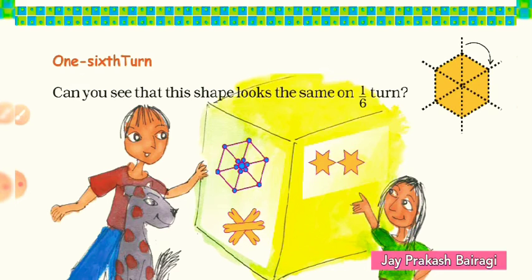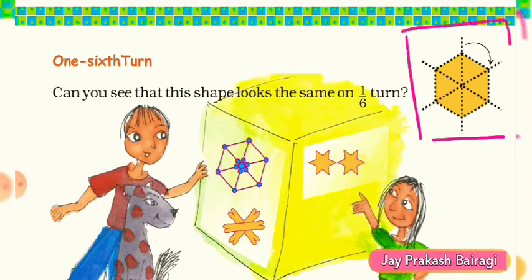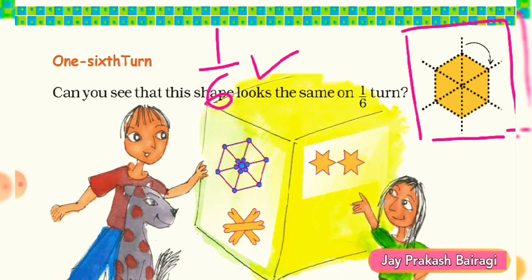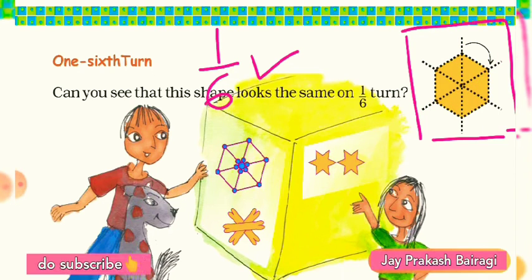To understand the one sixth turn, we take a picture. On the screen you can see a hexagon, and it is divided using some symmetry lines. It is very important to understand what one sixth turn is. To understand this, first we have to find its symmetry lines — minimum three symmetry lines. You can see the first, second, and third symmetry lines dividing the hexagon.